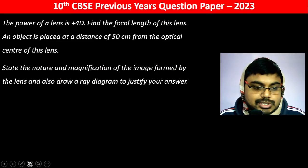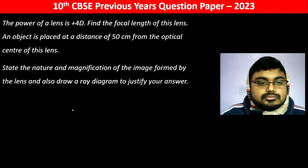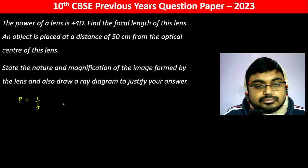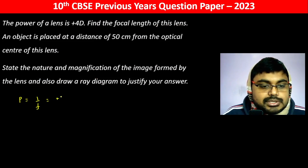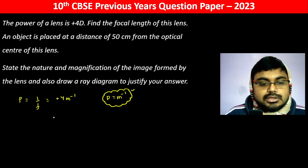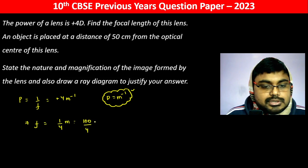The power of a lens is plus 4D. Power ka formula is 1 by F, which is equal to plus 4 meter inverse. Diopter is actually meter inverse. So F will be 1 by 4 meter, equal to 100 by 4 centimeter, which is equal to 25 centimeter.